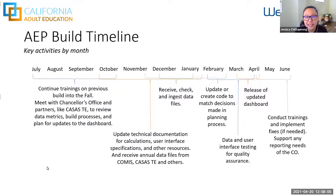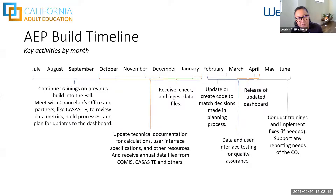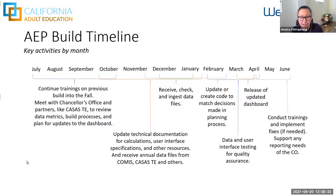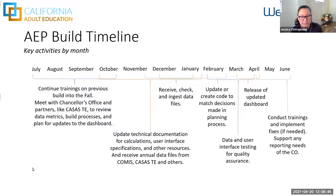We start the year really in July, continuing trainings on what was built in the previous year, as well as starting the planning process with the Chancellor's Office CAPE team and some other strategic leadership. We work a lot with partners, including both CASAS and our coding partners from Education Results Partnership, to review what worked and what didn't work from the last build process and figure out what we want to implement for the upcoming year.